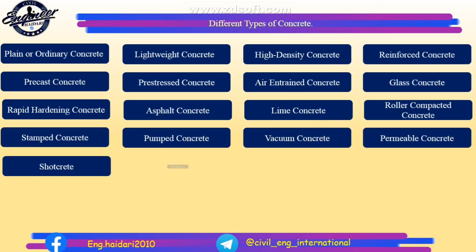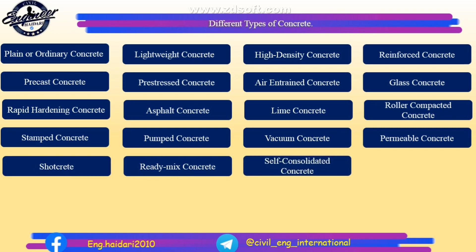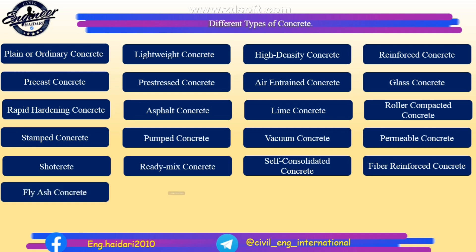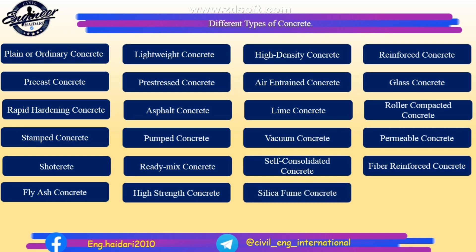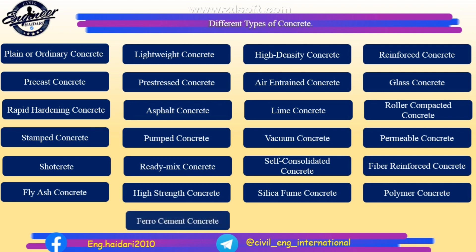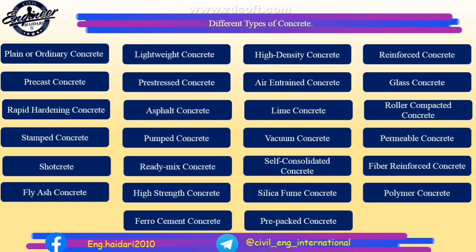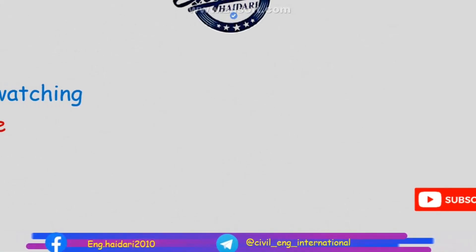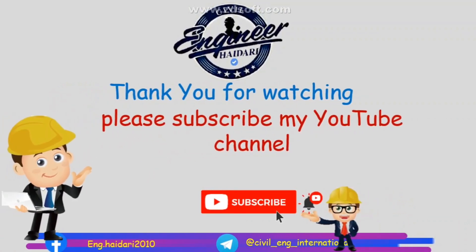17. Shotcrete. 18. Ready-mix concrete. 19. Self-consolidated concrete. 20. Fiber-reinforced concrete. 21. Fly-ash concrete. 22. High-strength concrete. 23. Silica-fume concrete. 24. Polymer concrete. 25. Ferro-cement concrete. 26. Pre-packed concrete.